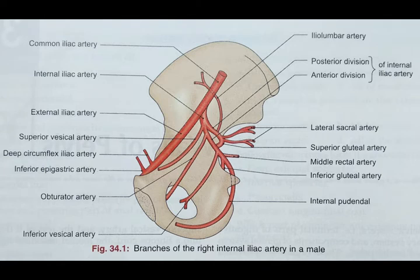The umbilical artery becomes obliterated in adults. So in adults, there are seven branches from the anterior division and three branches from the posterior division.